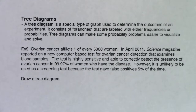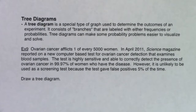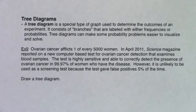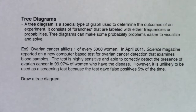As we go through this problem, I want you to think about the variables — what am I keeping track of for each woman? The problem states: ovarian cancer affects one of every 5,000 women. In April 2011, Science magazine reported on a new computer-based test for ovarian cancer detection that examines blood samples. The test was highly sensitive, able to correctly detect ovarian cancer in 99.97% of women who have the disease. However, it gave false positives 5% of the time. Draw a tree diagram.